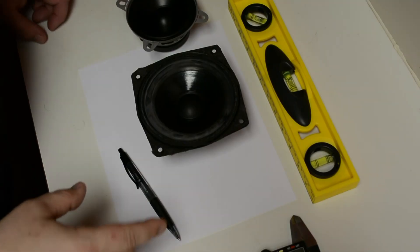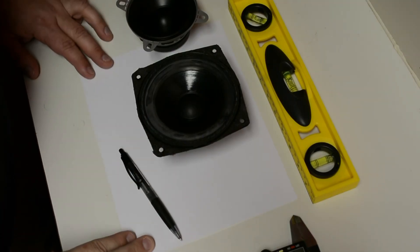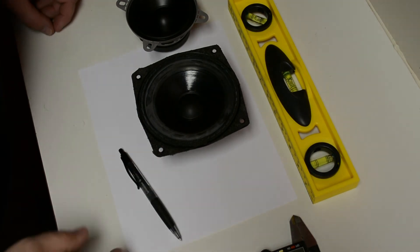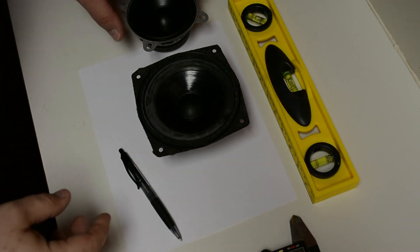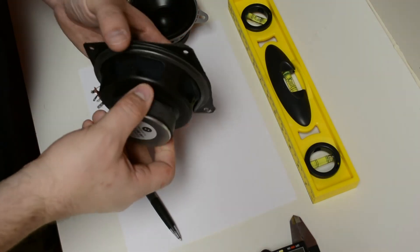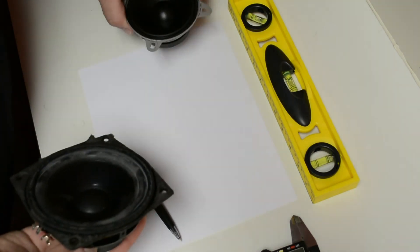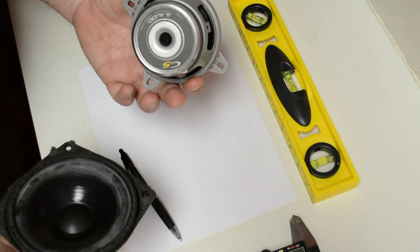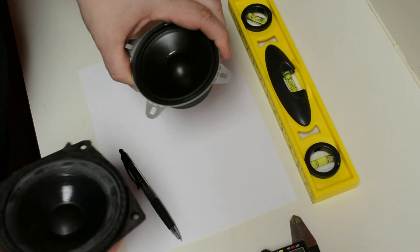Today we're going to show you how to make a car audio adapter ring for speaker installation in a car door. This is the factory speaker for this particular car, and this is the new JL Audio mid-range speaker that we're going to be putting in its place.